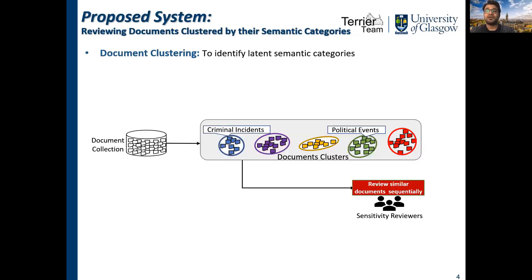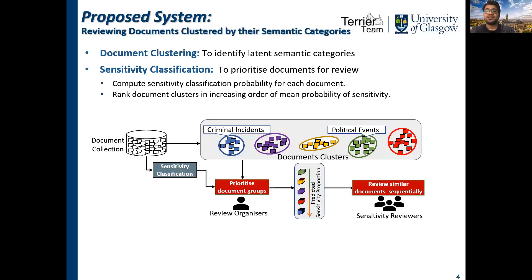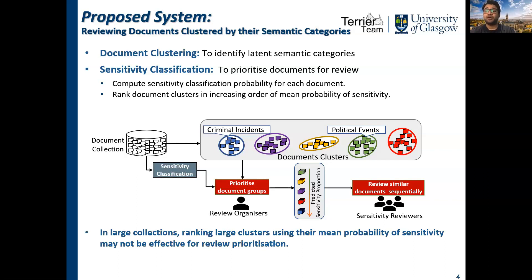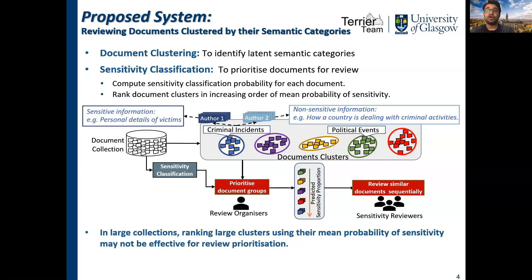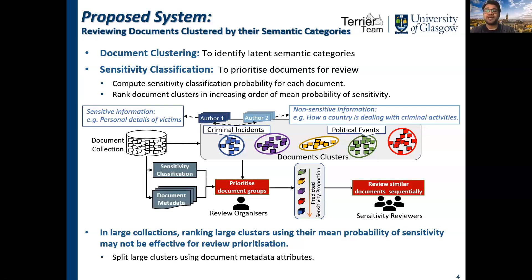In this work, we propose a system for sensitivity review that first deploys document clustering to identify latent semantic categories in a collection. It further deploys a sensitivity classifier to automatically prioritize document clusters by ranking them in increasing order of mean-predicted sensitivity to increase openness. However, in large collections, ranking clusters may not be effective for review prioritization, since a large cluster with even the lowest sensitivity proportion may still have many sensitive documents reviewed ahead of non-sensitive documents in other clusters. For example, in the criminality cluster, documents from author 1 can present sensitive information such as personal details of victims, whereas documents from author 2 can discuss general non-sensitive information such as how a country is dealing with criminal activity.